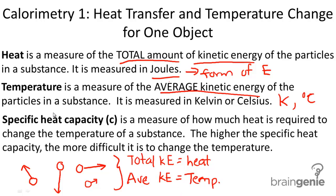Last term. Specific heat capacity given by the variable C. Specific heat capacity is a measure of how much heat is required to change the temperature of a substance. The higher the specific heat capacity, the more difficult it is to change the temperature.